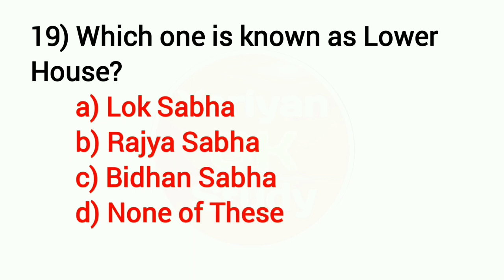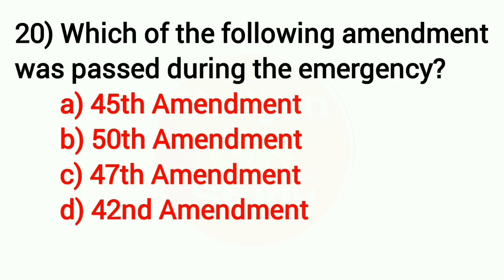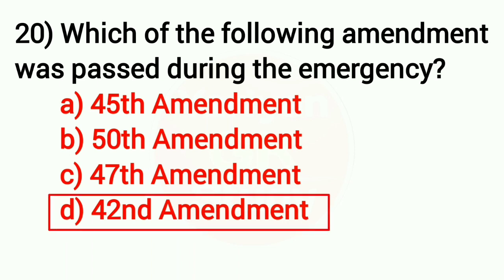Question number 19: Which one is known as the lower house? Answer: Option A — Lok Sabha. Question number 20: Which of the following amendments was passed during the Emergency? Answer: Option D — the 42nd Amendment.